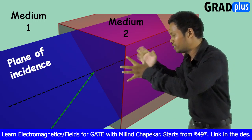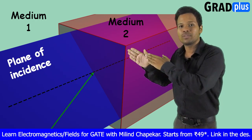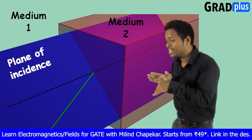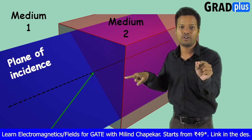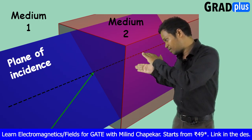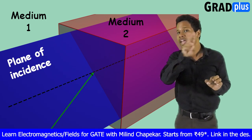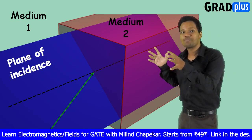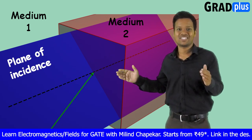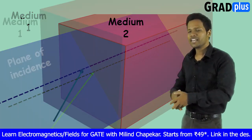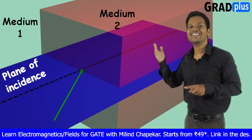Let me repeat — check the screen carefully. The plane containing the incident wave, the direction of propagation of the incident wave, the propagation vector of the incident wave, and the normal to the boundary surface — where the boundary surface is the separation between two media — the plane containing these two lines or rays, as you can see from the screen, is known as the plane of incidence. If your electromagnetic wave is hitting like this, then your plane of incidence will be as shown.